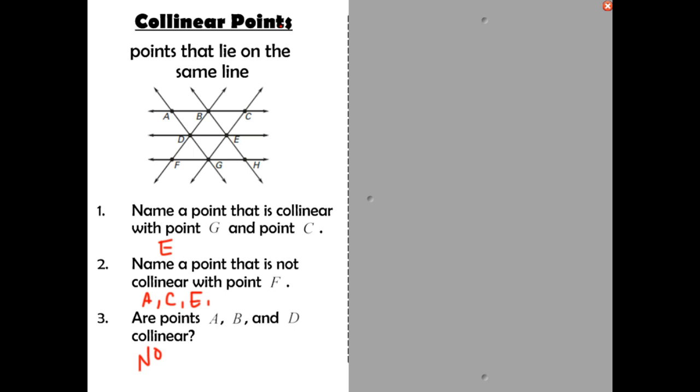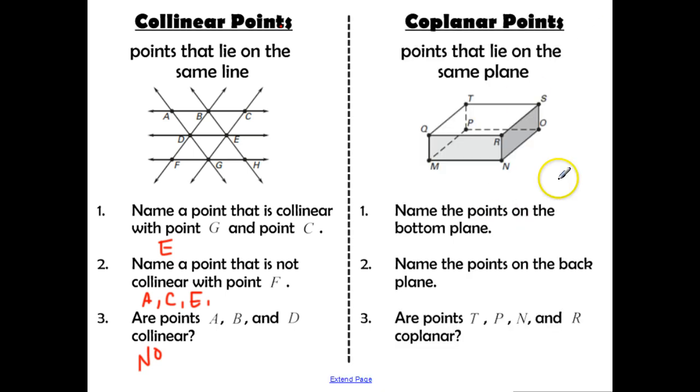Now, let's take a look at a term that is really similar, and this is coplanar points. These are points that lie on the same plane. So again, we have co- together, planar, you think of plane and points. So points together on a plane. Now, looking at this diagram, remember, we need to think about planes as surfaces. So this is like a box, so you have the top, the bottom, the front, the back, the left side, and the right side. So sometimes seeing three-dimensional figures in 2D is a little tricky, but you kind of need to train yourself to be able to see that.